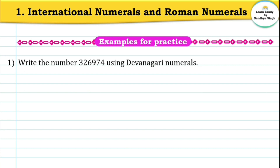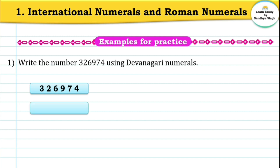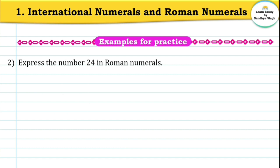Now let's do some practice. Write the number 3,26,974 using Devanagari numerals. We convert digit by digit from international numerals to Devanagari numerals: 3, 2, 6, 9, 7, 4 are each written in their Devanagari script equivalents.